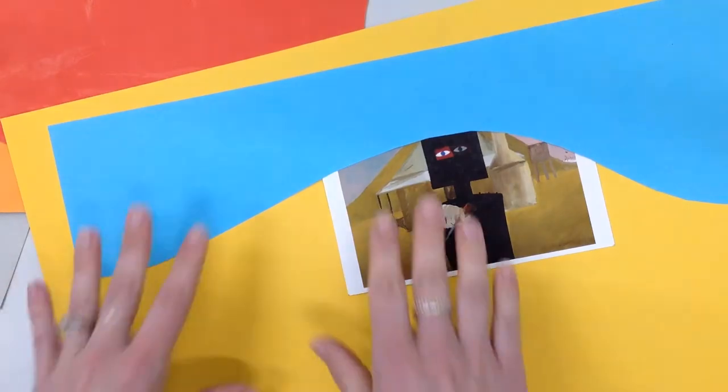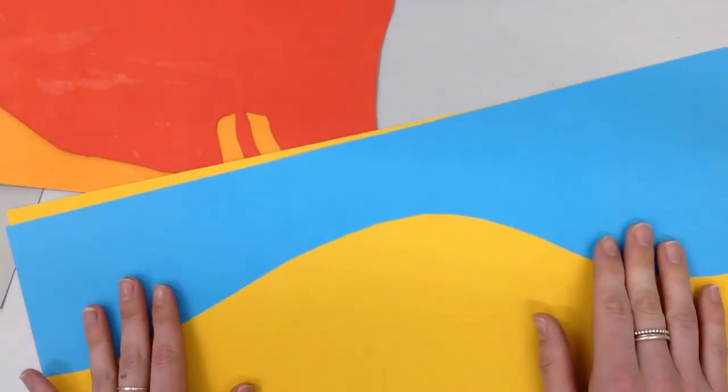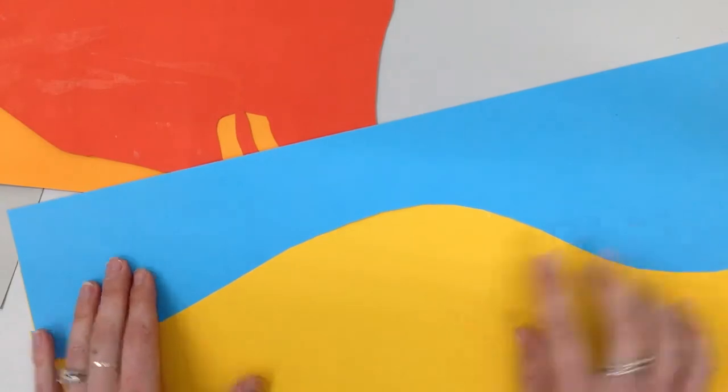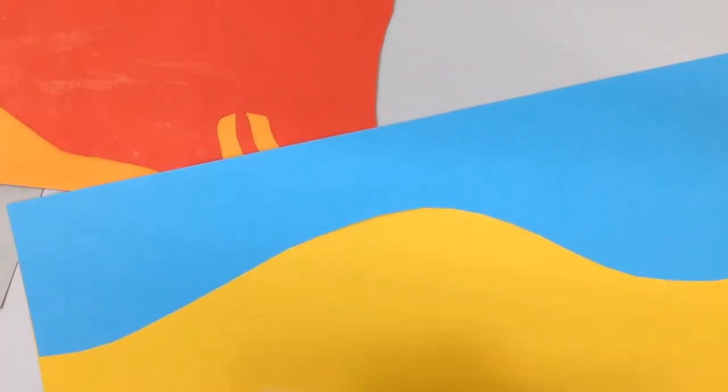So I'm almost working in negative here. I'm going to cut a shape out. Now this can obviously be reused, don't scrunch it up, put it in the collage box please. So this is going to create my sky and this kind of hill that's happening in the background.